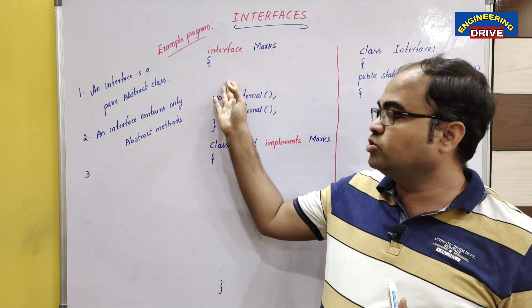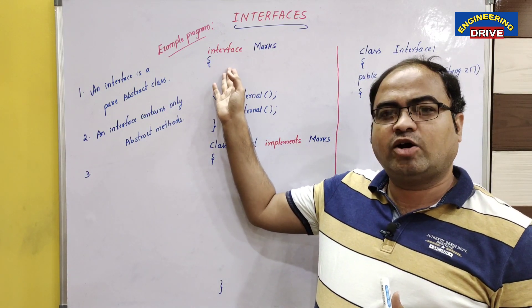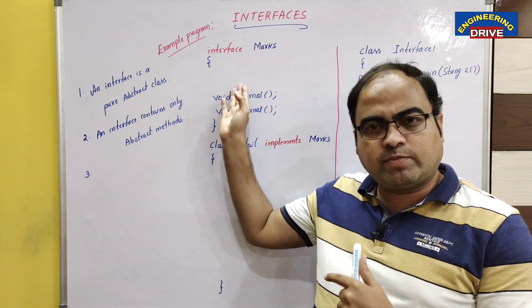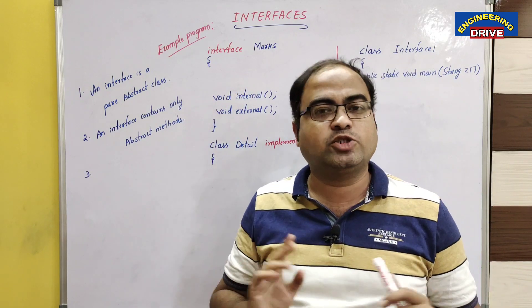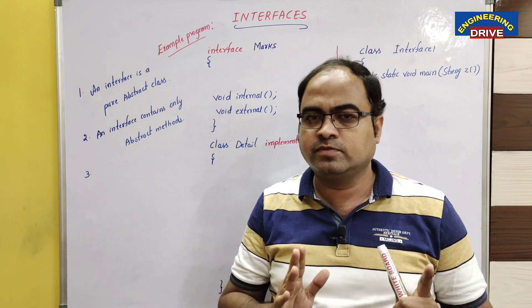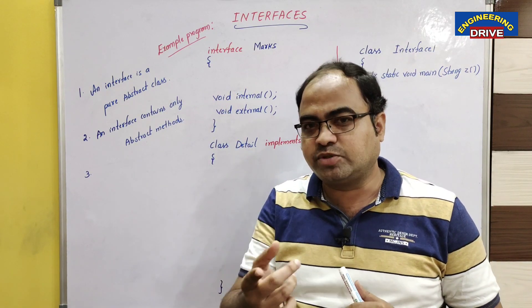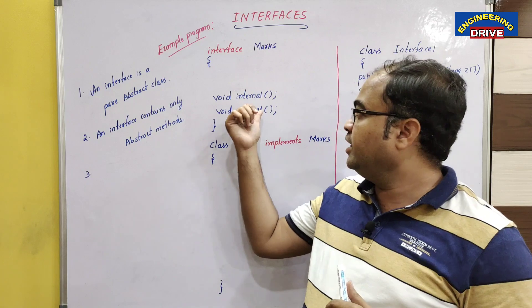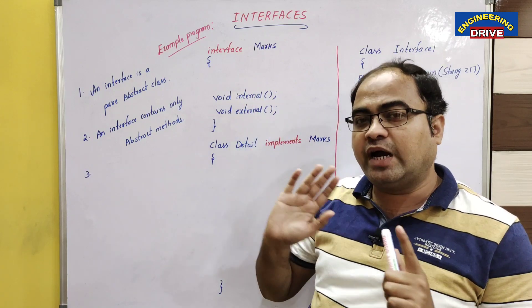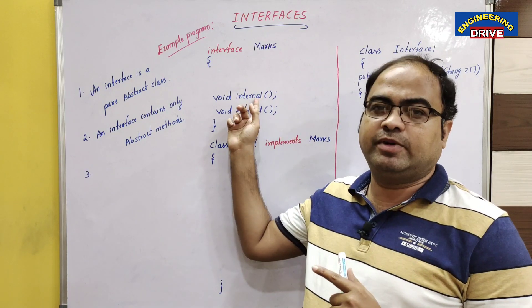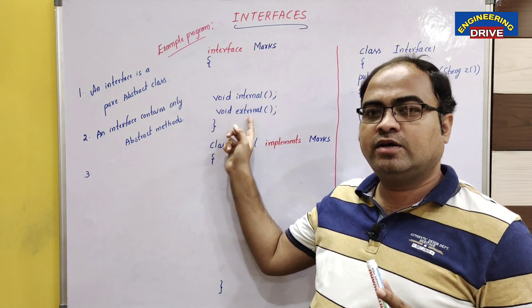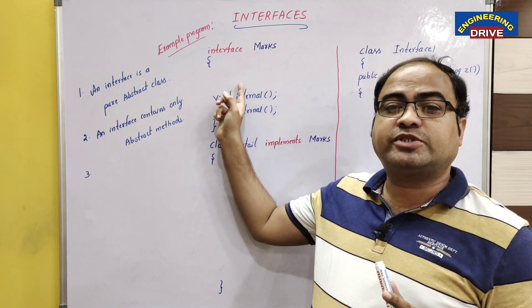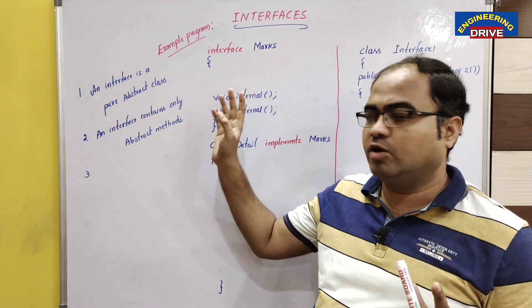Student question: Can we define normal methods also in an interface, with body? Answer: No, it is not possible. Unlike abstract class, in interface we cannot define normal methods — only abstract methods can be defined.